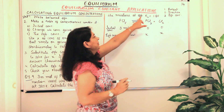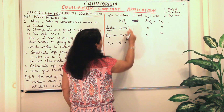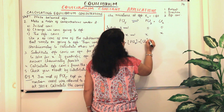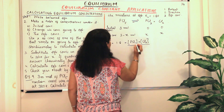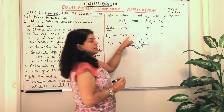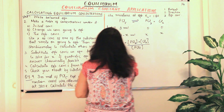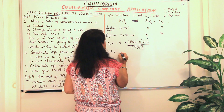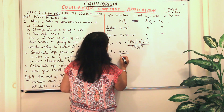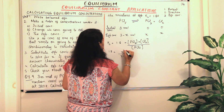Now, we have been given the equilibrium constant. The equation for Kc, which is equal to 1.8, is equal to the concentration of PCl3 multiplied by the concentration of Cl2, each raised to the power of their stoichiometric coefficients (which are 1), divided by the concentration of PCl5. In terms of X, substituting: Kc = 1.8 = (X × X) / (3 − X), which gives us X² / (3 − X).